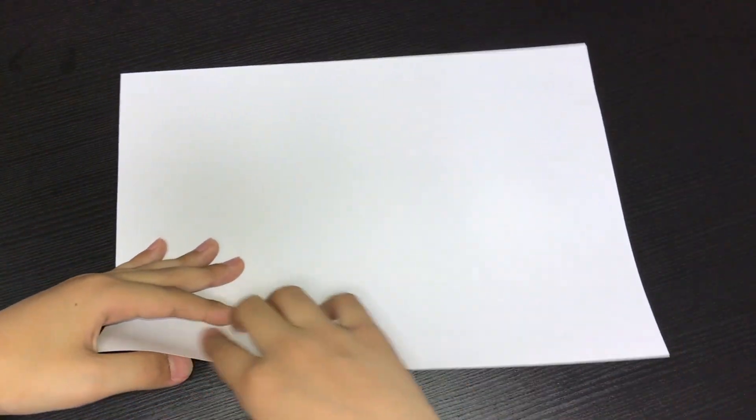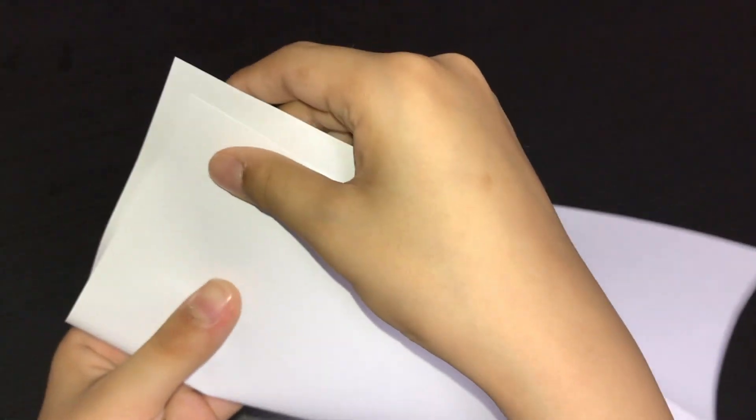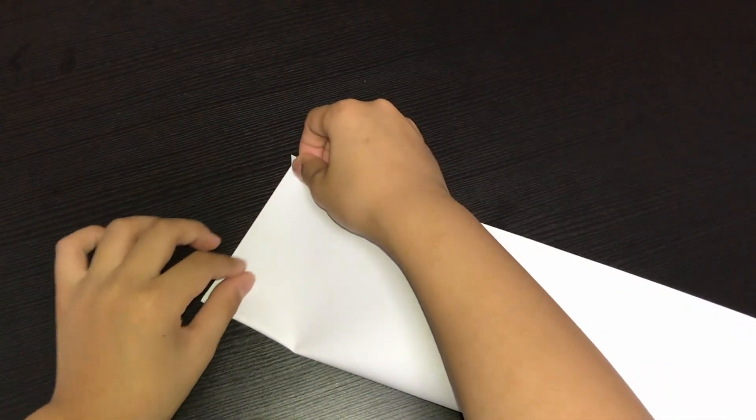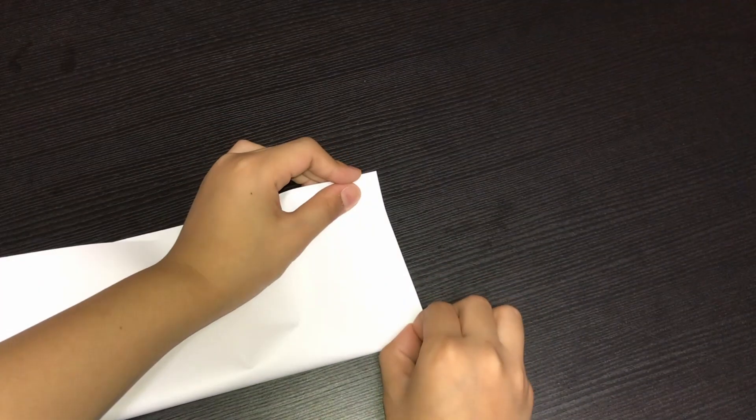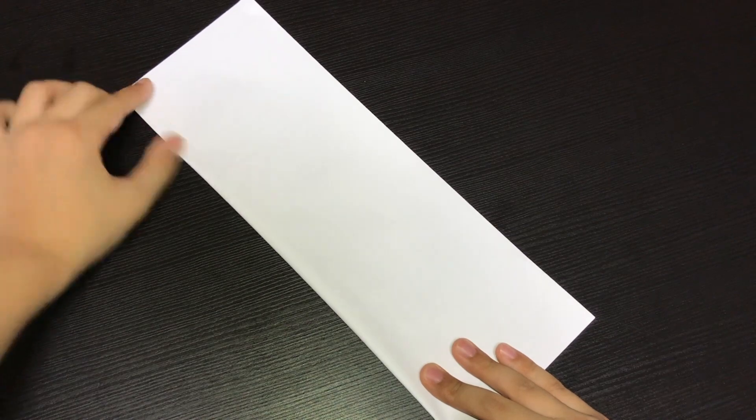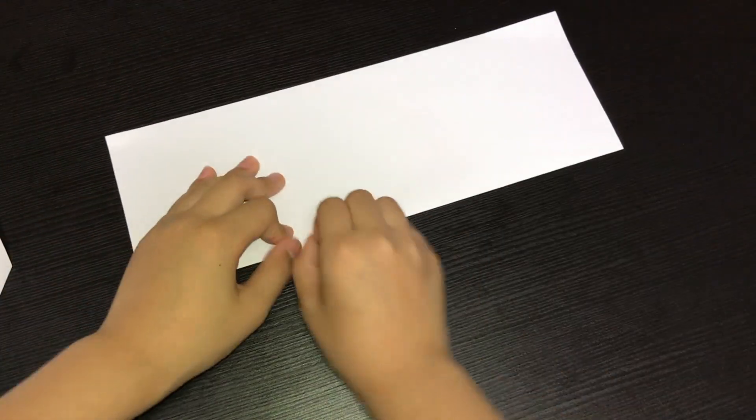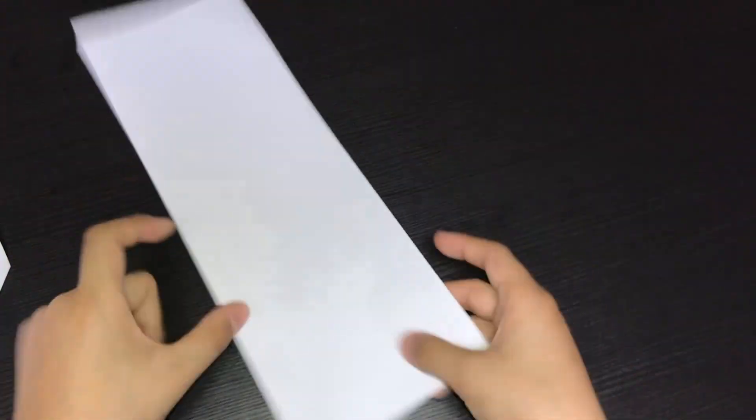So the first step is to fold it off the long way. The way to make it really precise is you can just make sure that these two points are actually matching. Put it inside and make a pinch mark, and just repeat on this side. Make a pinch mark, and you can also just align the two pinch marks.